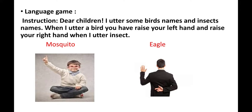Before going to read the lesson, I will engage the children with a listening game. Dear children, I will utter some birds' names and insects' names. When I utter a bird, you have to raise your left hand, and raise your right hand when I utter an insect. So if I say dragonfly, the student has to raise the right hand. If I say eagle, the student has to raise the left hand. Rapidly and briskly, I utter some words and the students raise their hands accordingly. Some may not respond properly but will correct themselves. They will also play the same game at their leisure hours.